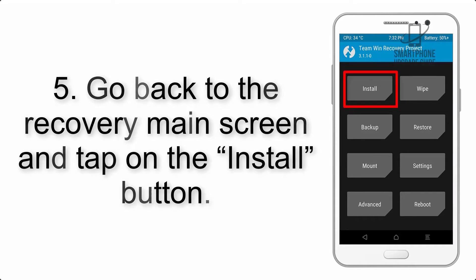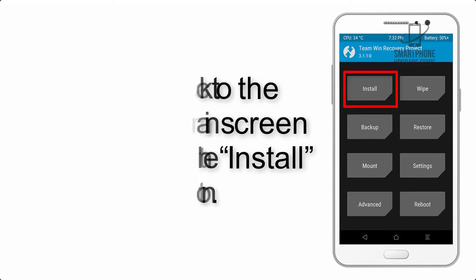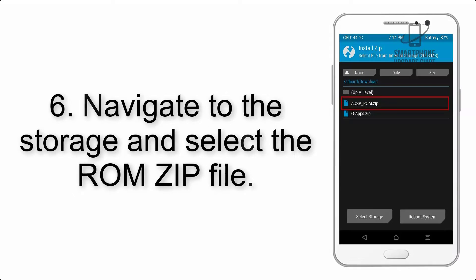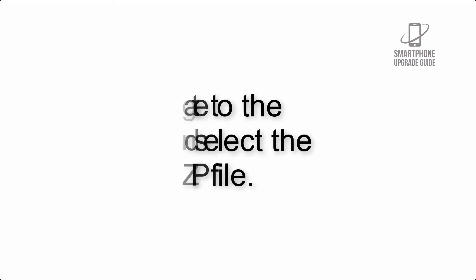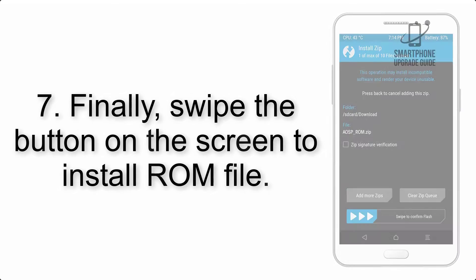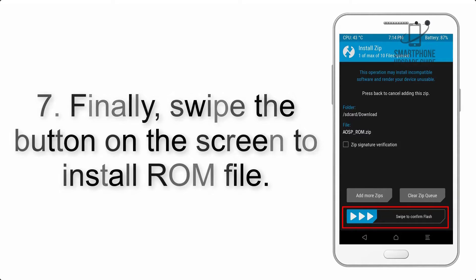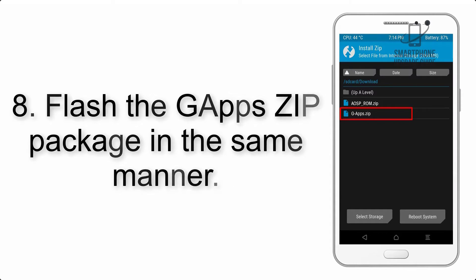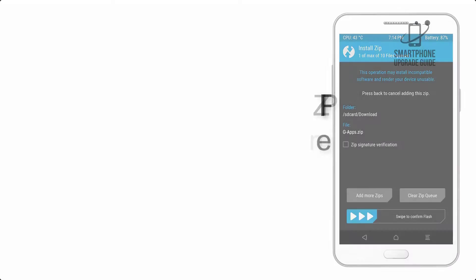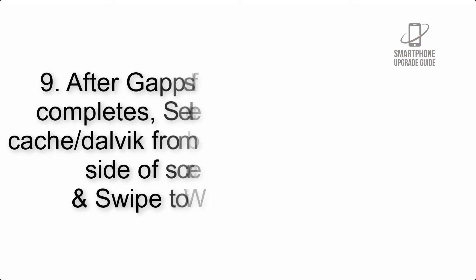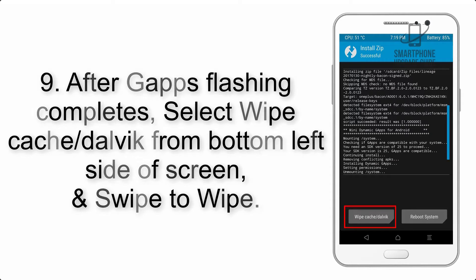Step 5: Go back to the recovery main screen and tap on the Install button. Step 6: Navigate to the storage and select the ROM zip file. Step 7: Swipe the button on the screen to install the ROM file.